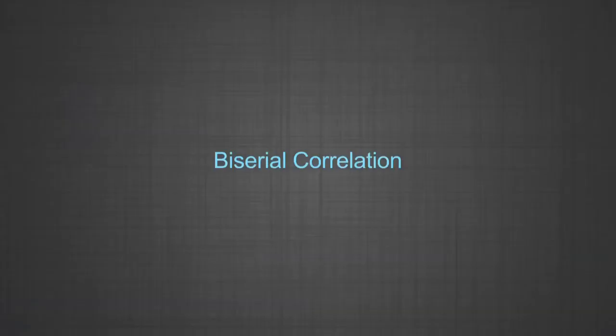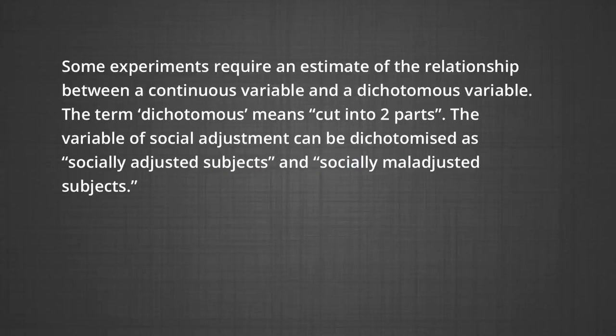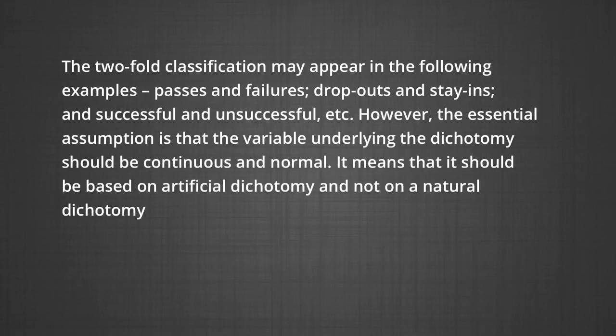First, we are going to discuss biserial correlation. Some experiments require an estimate of the relationship between a continuous variable and a dichotomous variable. The term dichotomous means cut into two parts. For example, social adjustment can be dichotomized as socially adjusted and socially maladjusted subjects. However, the essential assumption is that the variable underlying this dichotomy should be continuous and normal, based on artificial dichotomy, not natural dichotomy.